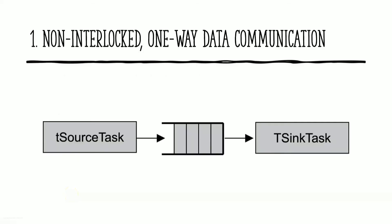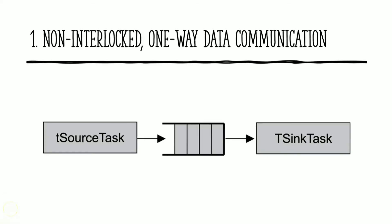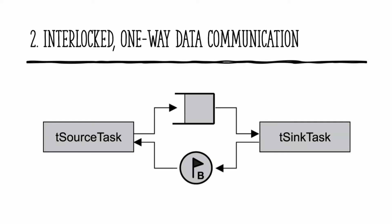The various methods of data communication possible with message queues: the first is non-interlocked one-way communication. Here there is only one-way communication — a source task always sends data to the message queue and a sink task always receives data from the message queue. There is no acknowledgement or authentication happening between the two tasks. It is completely one-way communication.